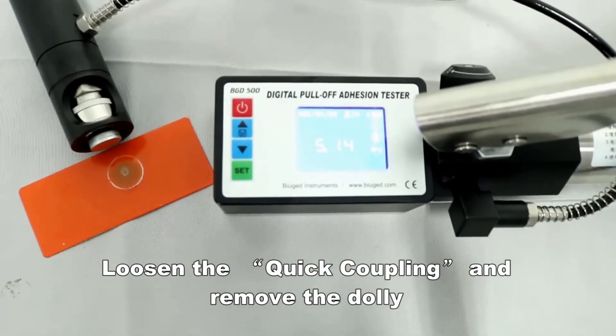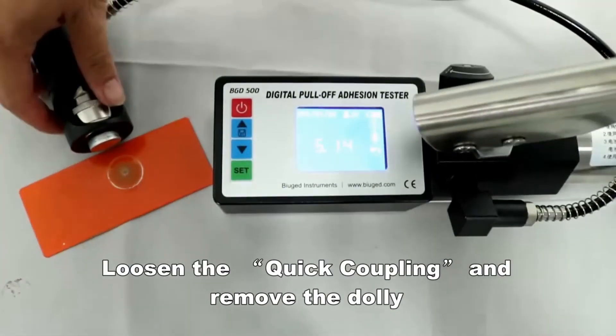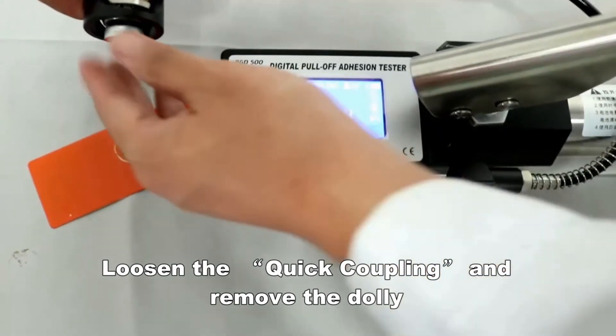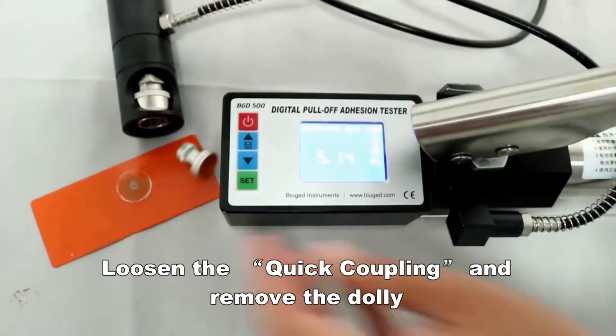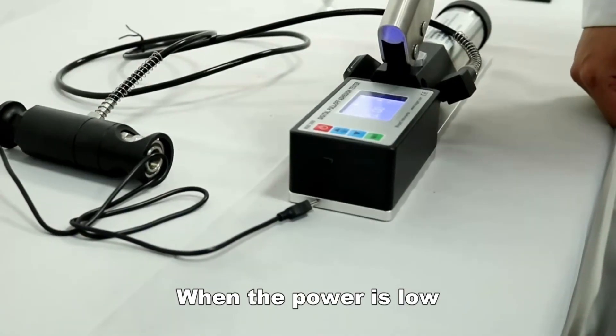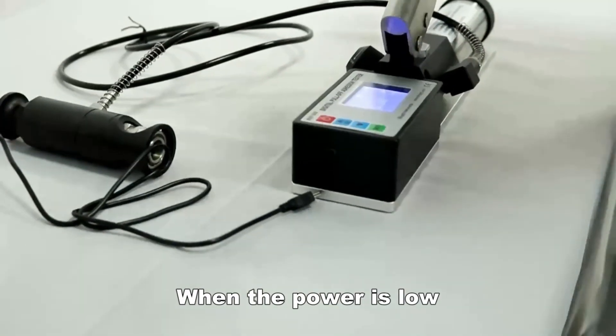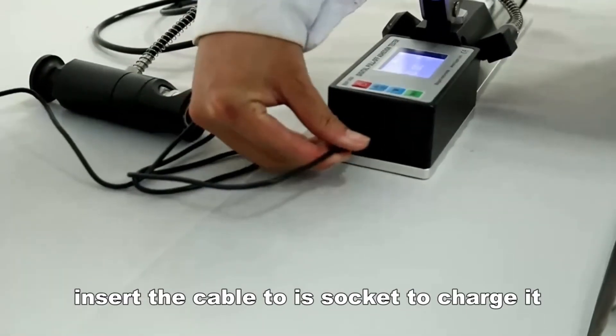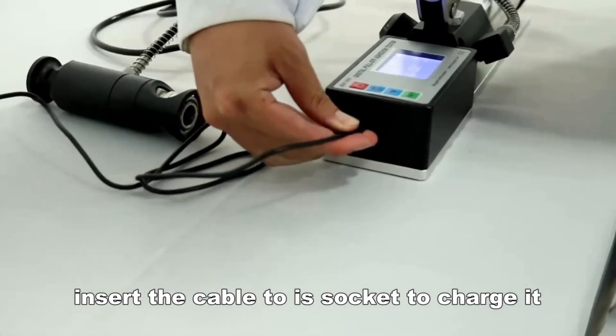Loosen the quick coupling and remove the dolly. Press the power button again to zero the tester. When the power is low, insert the cable to a socket to charge it.